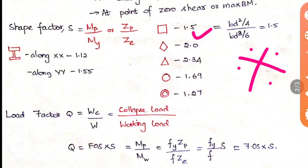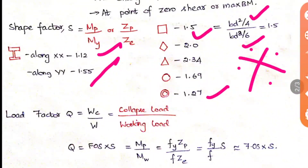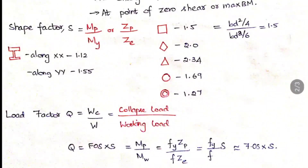The shape factor for a rectangular section is 1.5. For a diamond section it is 2. For a triangular section it is 2.34. For a circular section it is 1.69 (or 1.7). For a tubular section it is 1.27. For an I-section (eye section) along the XX axis it is 1.12, and along the YY axis it is 1.55. These are the basic and important shape factor values you must know.